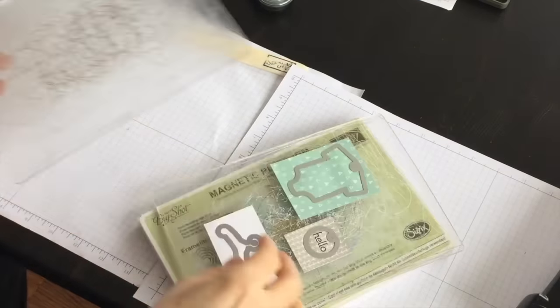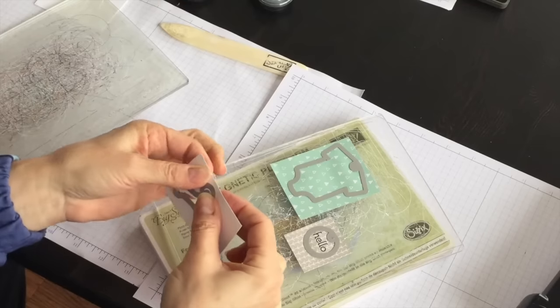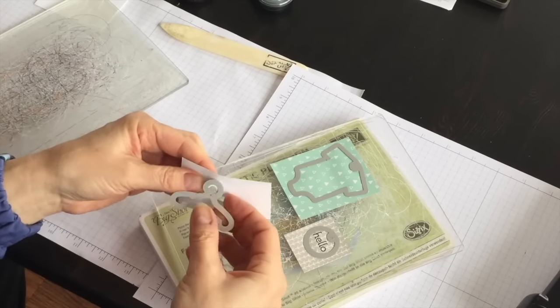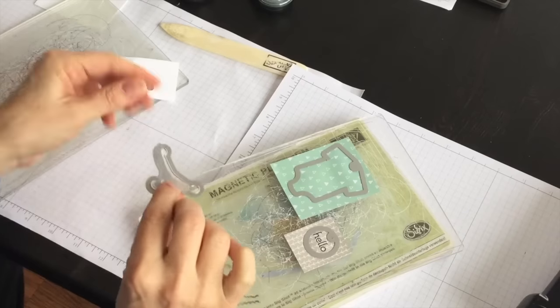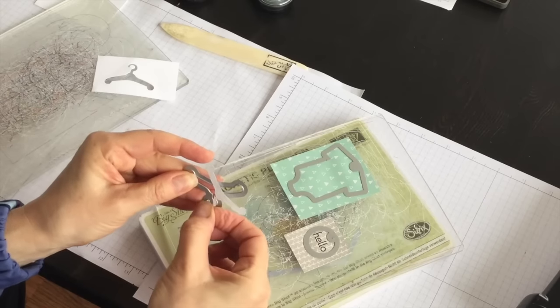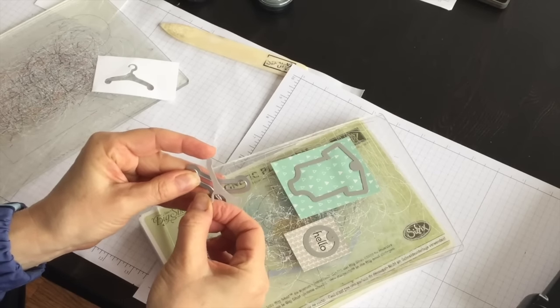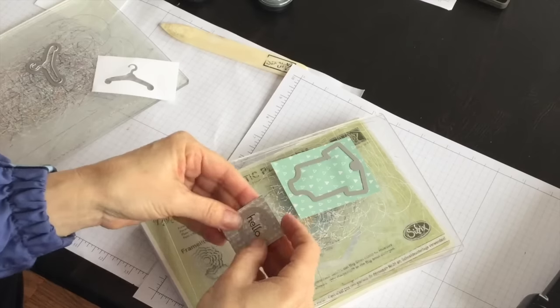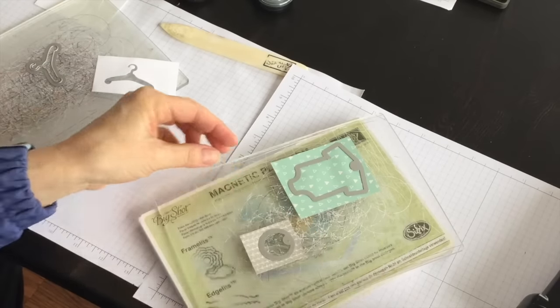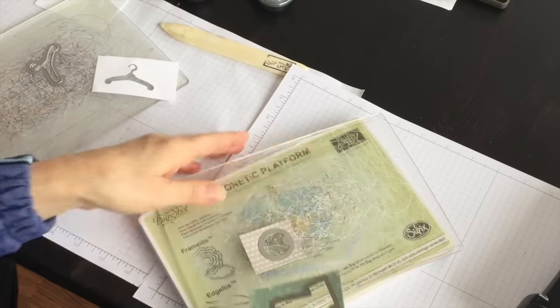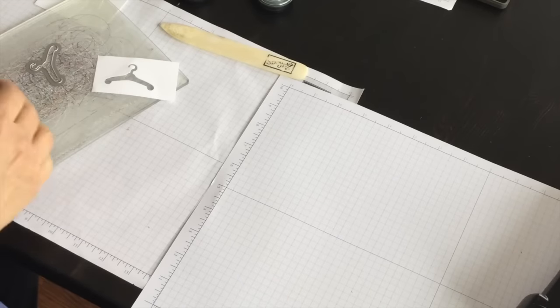And then run it through the Big Shot and I can punch these all out. The hanger piece you have to be very careful so that the top part doesn't rip. I had my paper piercing tool, I would use that to help me. There we go. So there's the hanger, there's the hello bib, and then here's the onesie.